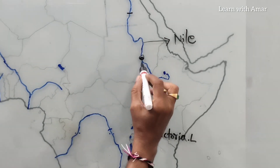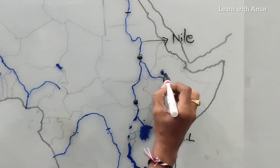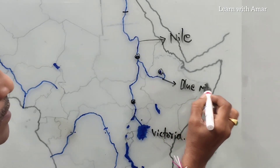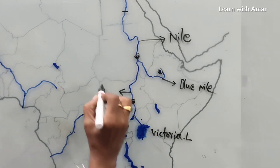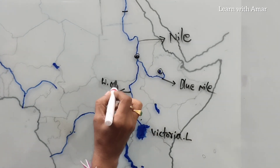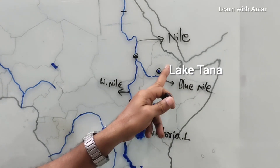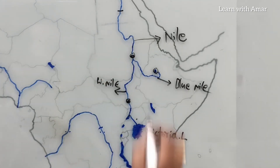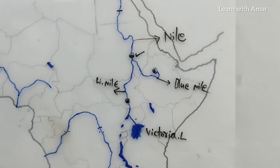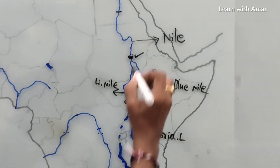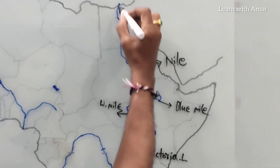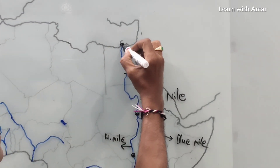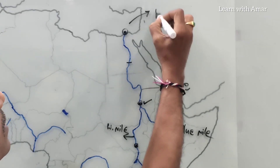White Nile goes up and this is Blue Nile. Blue Nile originates from Lake Tana. White Nile goes northward and these two join at Khartoum, the capital city of Sudan, and flow northward. Finally, it joins the Mediterranean Sea at Alexandria.